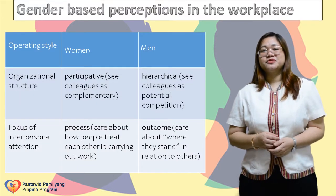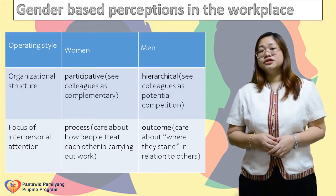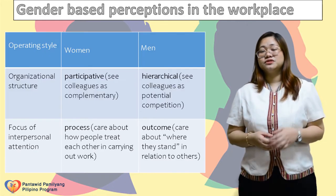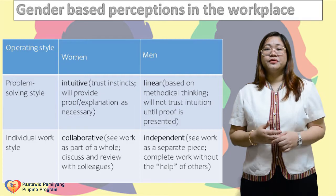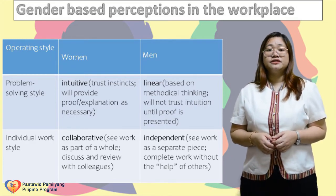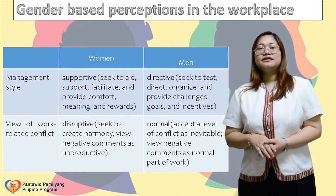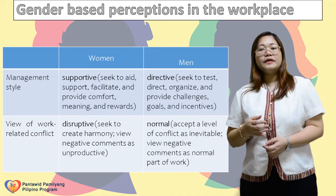Here is the distinction between gender-based perception and male and female leadership. On organizational structure, women are more participative while men are hierarchical. On interpersonal tension, women focus on the process while men focus on the outcome. Their problem-solving styles also differ — women trust instincts while men will not trust intuition unless proven. On work style, women are collaborative while men are independent. On management style, women are supportive while men are directive. Women view work-related conflict as destructive while men view conflict as normal. However, remember that gender-based perceptions are not written in stone. A balance of masculine and feminine qualities has proven to be the best strategy for success for individuals, teams, and organizations.